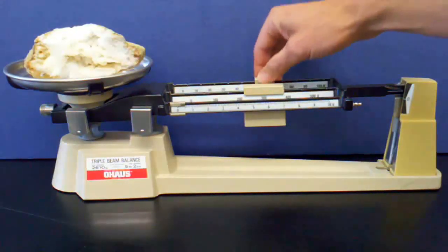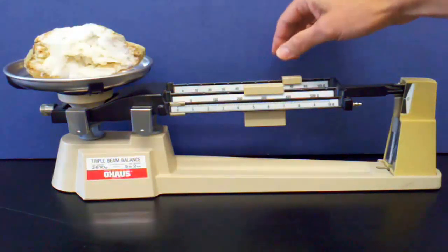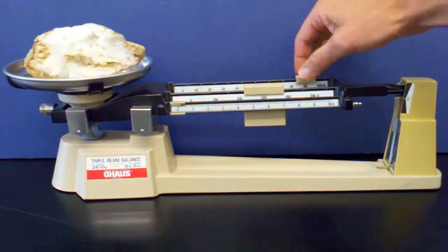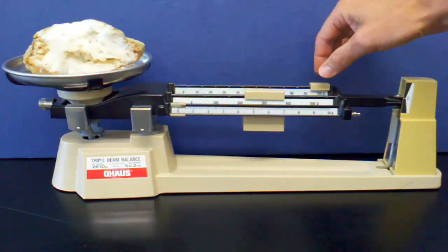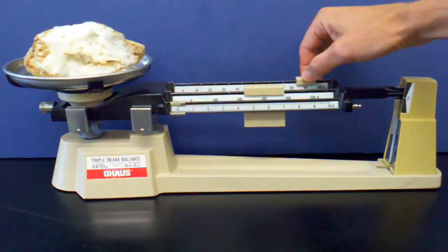I'll do the same with the 10-gram slide. I'll find out where it is heavier than the object in the pan as the balance tips, and then I will slide it back one notch.